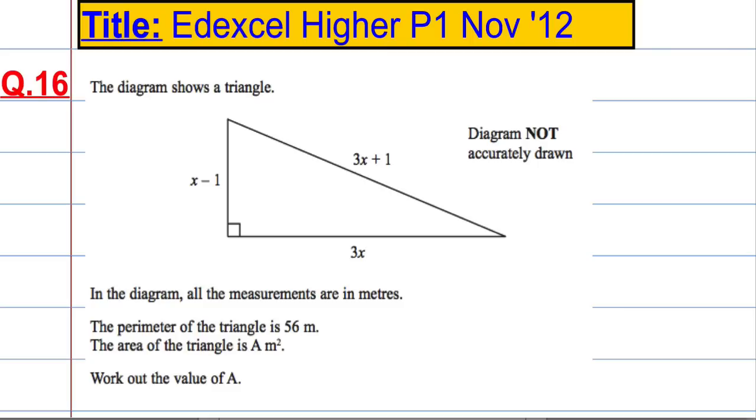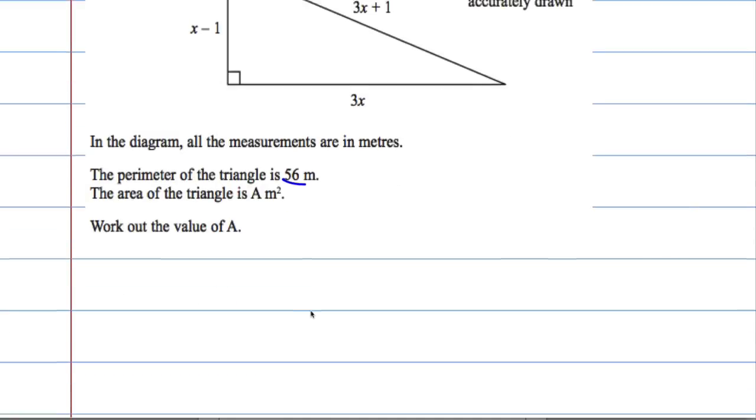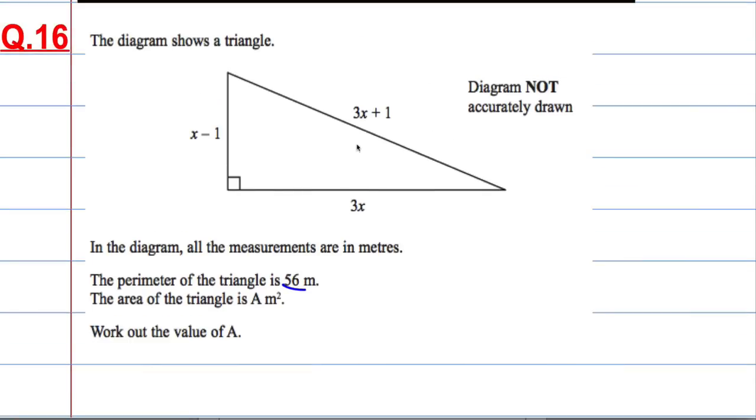Okay, well, the key piece of information is this. The perimeter of the triangle is 56 metres. And to get the perimeter of any shape, we add up all the sides.